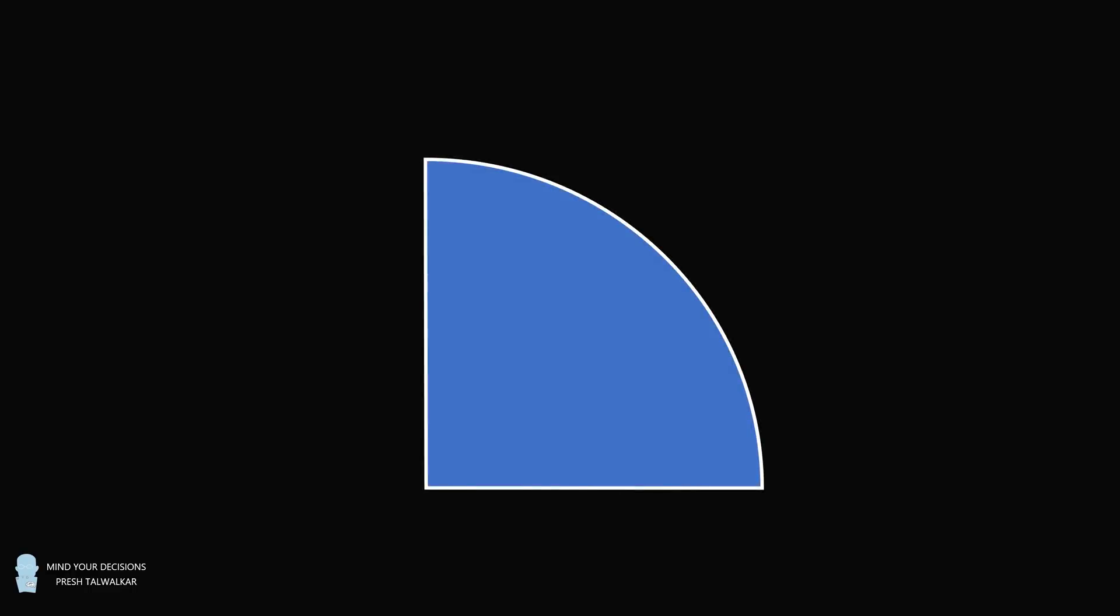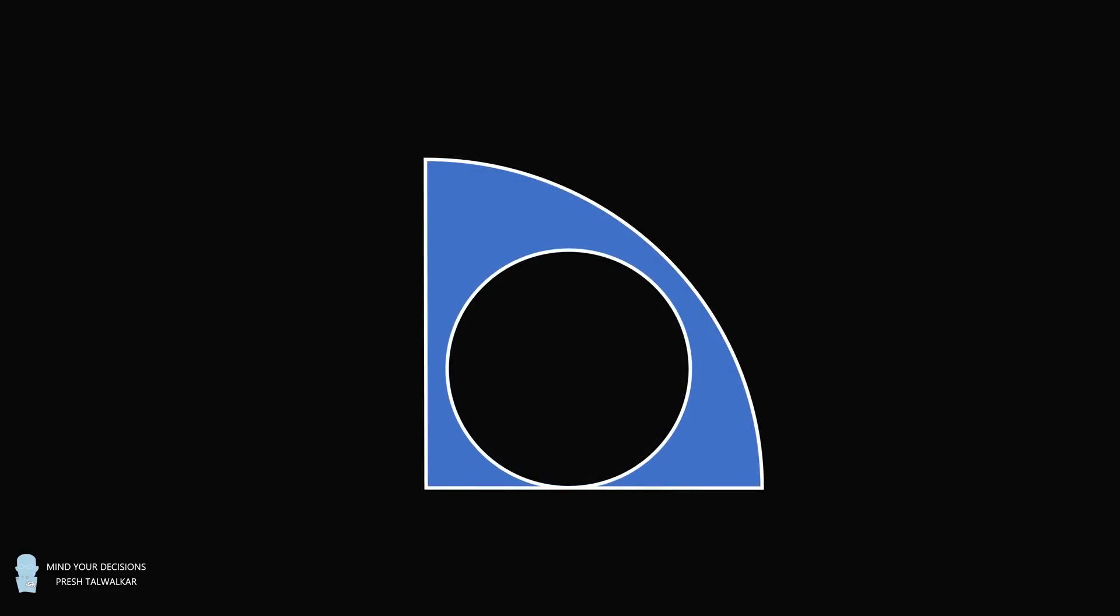Hey, this is Presh Walker. A quarter circle contains a circle that is tangent to one of its sides.